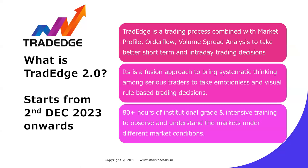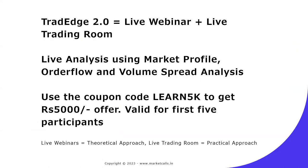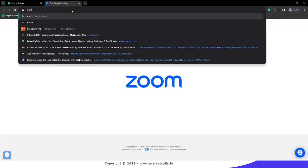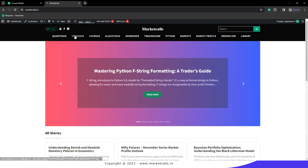We are conducting a TradeEdge 2.0 mentorship program on Market Profile, Order Flow and Volume Spread Analysis starting from December 2nd onwards. It's almost 80-plus hours of institutional grade and intensive training. It's a fusion approach to bring systematic thinking among serious traders for emotionless and visual rule-based trading decisions. You can use the coupon code LEARN5K to get 5,000 rupees off, valid for the first five participants. Visit marketcalls.in and click on TradeEdge at the top of the menu.